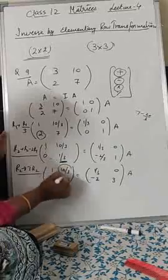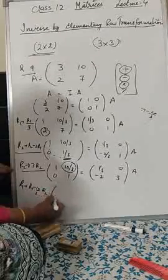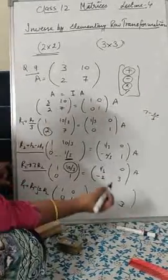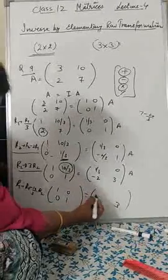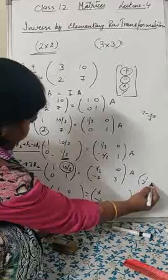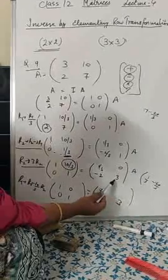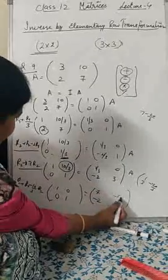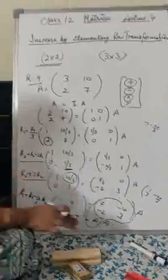Next step: make the (1,2) entry zero. Apply R1 = R1 − (10/3)R2. The left side becomes [1, 0; 0, 1]. On the right: 1/3 + 20/3 = 21/3 = 7, and 0 − 10/3 × 3 = −10. So A⁻¹ = [7, −10; −2, 3]. That is your answer for the 2×2 matrix.